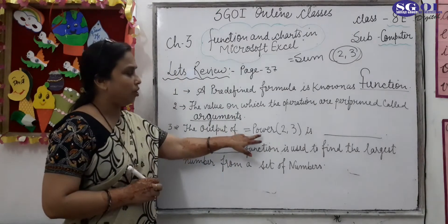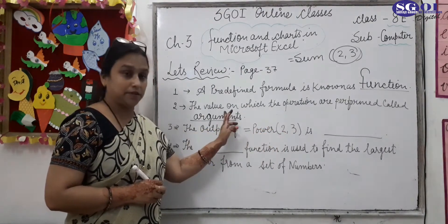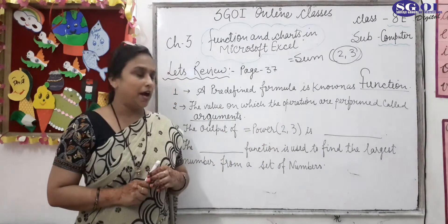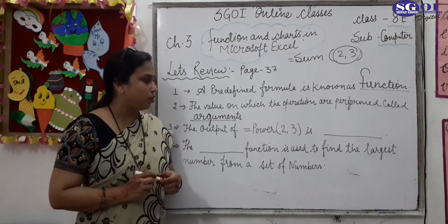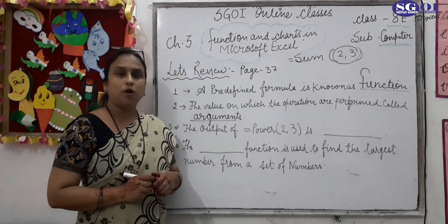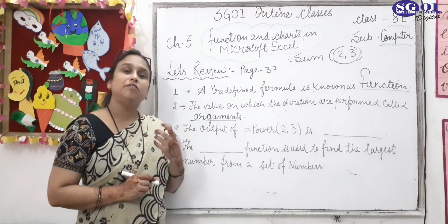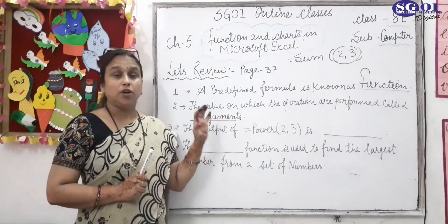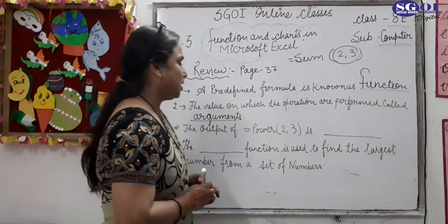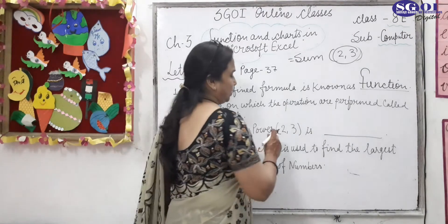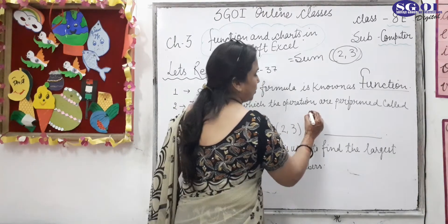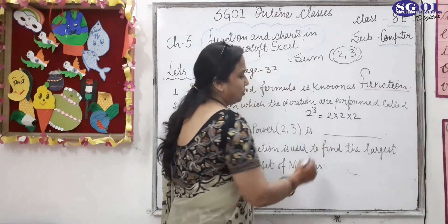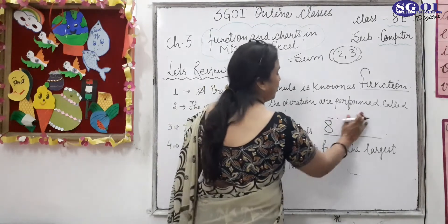Next is the output of power 2,3. That means the output value of equal power 2,3. 2,3 ka matlab kya ho gaya? 2 to the power 3. So you have 2 into 2 into 2. The answer will be 8. I think this is clear all of you.